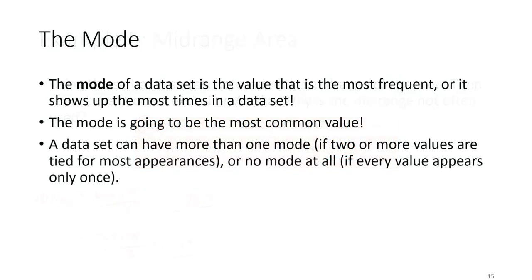The mode of a data set is the value that appears most frequently. The data set can have more than one mode if two values are tied for the highest frequency, or no mode at all if every value is different. Having every value be different happens often with numerical data, so the mode is not always useful for numerical data.